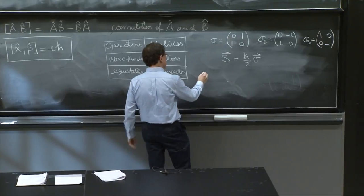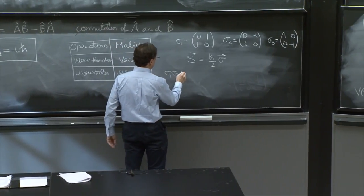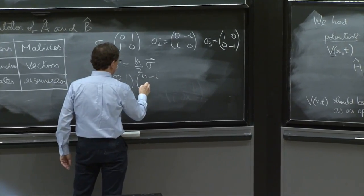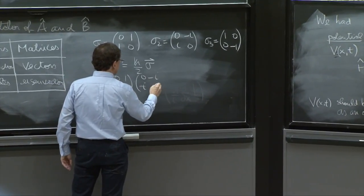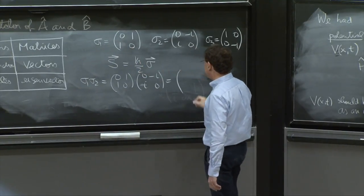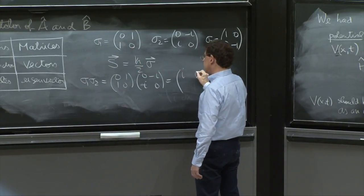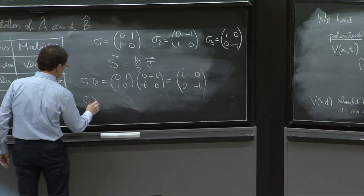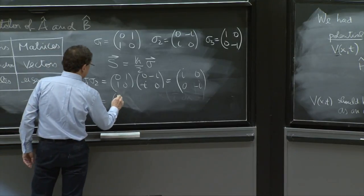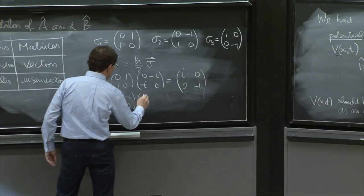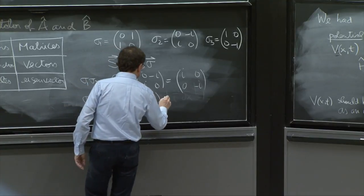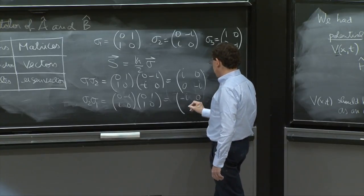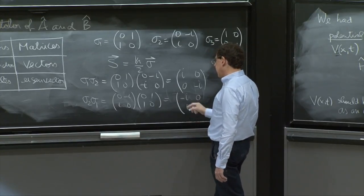And you can do simple things, like sigma 1 times sigma 2. 0, 1, 1, 0 times 0 minus i, i, 0. Let's see if I can get this right, i, 0, 0, minus i. And you can do sigma 2, sigma 1. 0 minus i, i, 0, 0, 1, 1, 0 equals minus i, 0, 0, i.